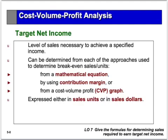To determine the level of sales necessary to achieve a specific amount of income, we're going to look at it again as we did with the cost volume profit at zero income. We're going to look at how we calculate it mathematically using the contribution margin — both in number of units and total sales dollars needed to achieve the target net income.